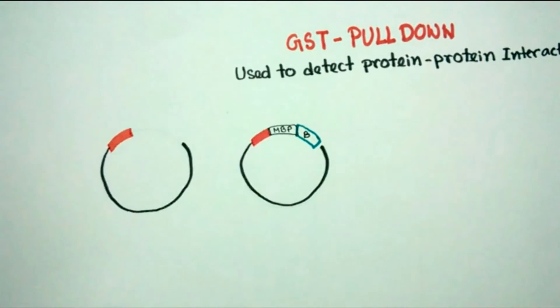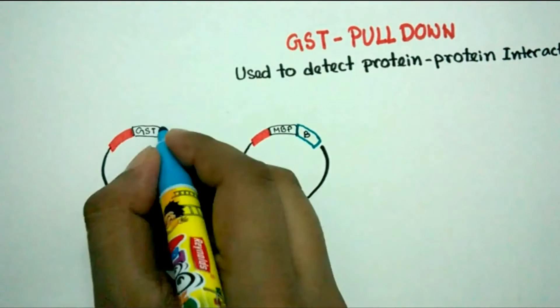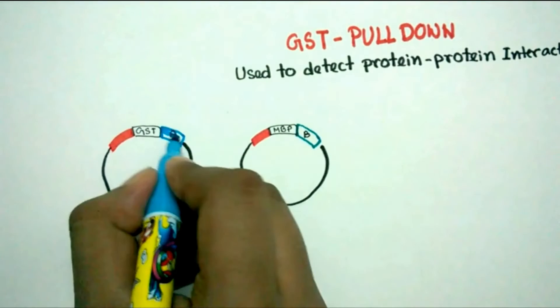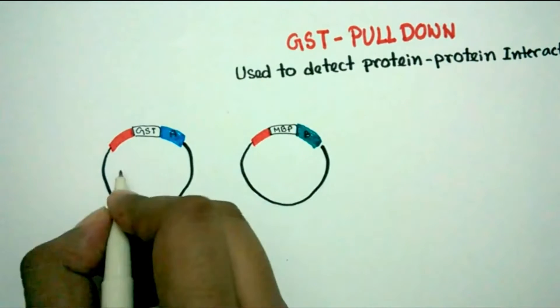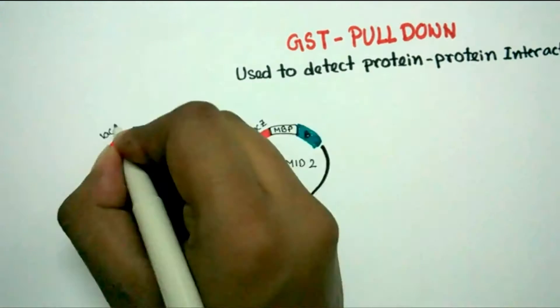Basically we need two bacterial expression vectors, plasmid 1 and plasmid 2. In plasmid 1 we have our protein of interest A, and in plasmid 2 we have our protein of interest B.